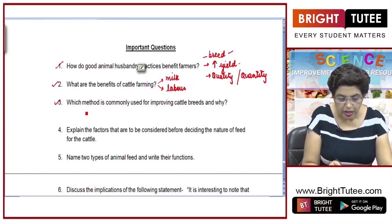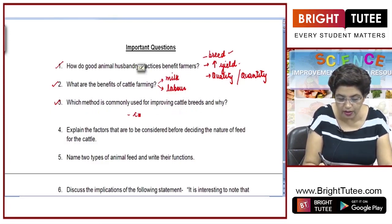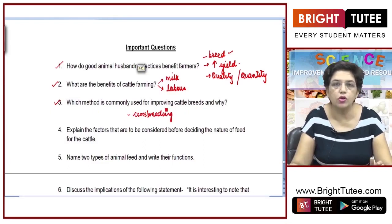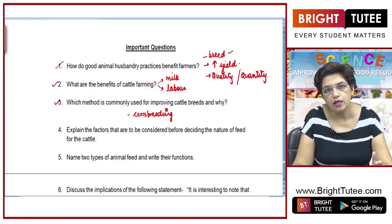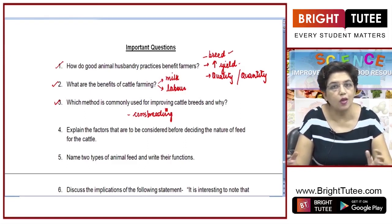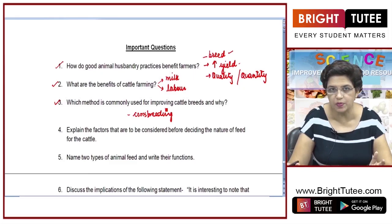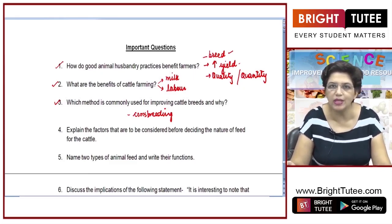Question number 3: which method is commonly used for improving cattle breeds and why? The commonly used method is crossbreeding. Crossbreeding between Indian and exotic or foreign breeds is done to obtain desirable characteristics. For example, the Swiss cow has a long lactation period while our Indian indigenous cow was resistant to diseases. Crossbreeding has been done and now we have good breeds of cow which have both desirable characteristics.